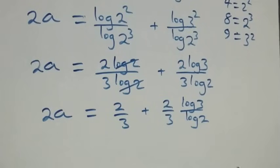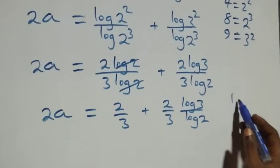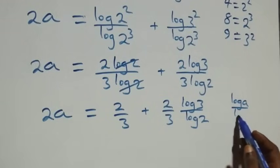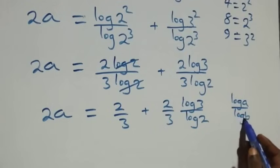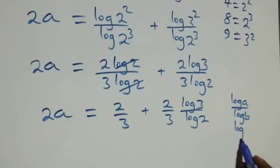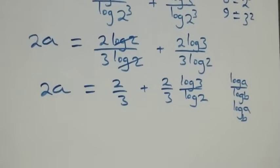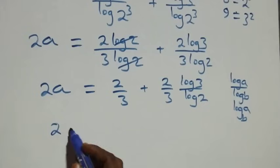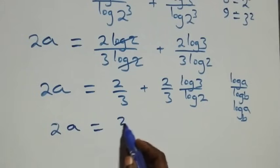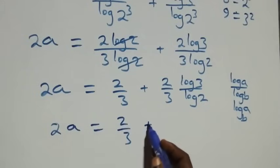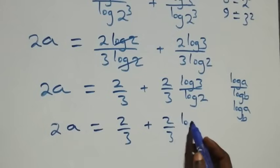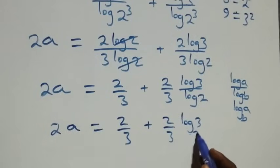The next step: we apply the change of base formula. When we have log 3 over log 2, this can be written as log base 2 of 3. So what we have becomes 2a equals 2 over 3 plus 2 over 3 times log 3 base 2.